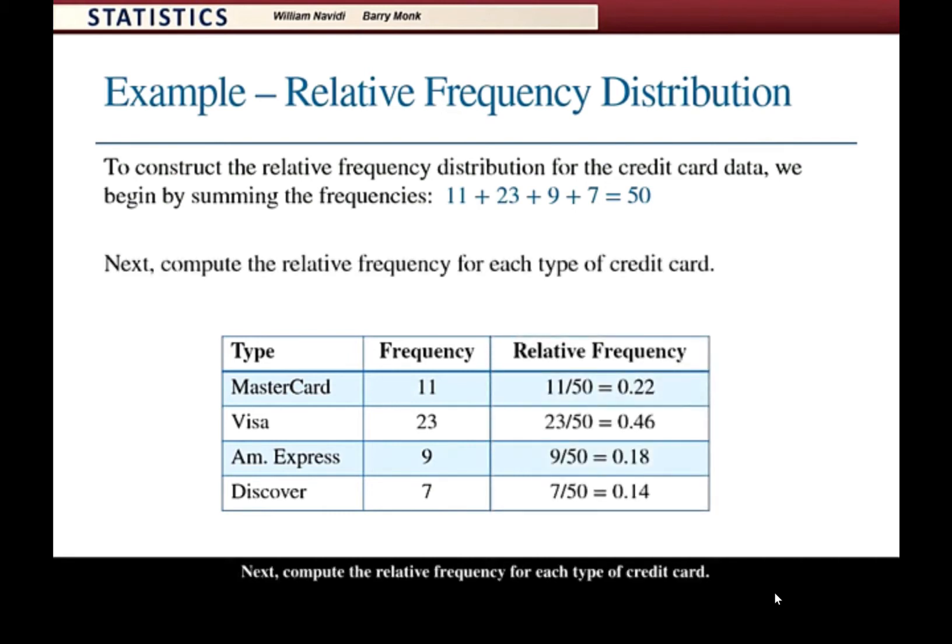Next, we compute the relative frequency for each type of credit card. For MasterCard, 11 over 50 equals 0.22.